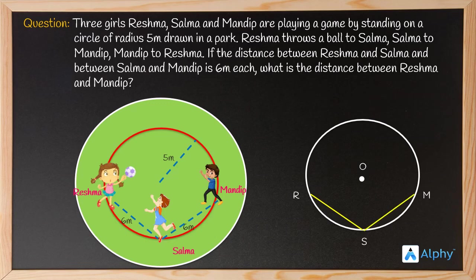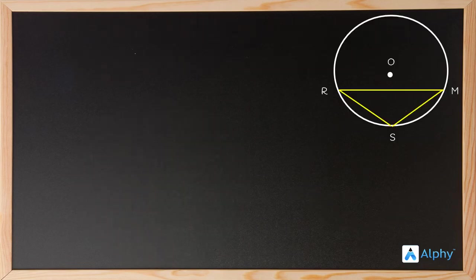Joining these points, we need to find RM — the distance between Reshma and Mandeep. When drawing the diagram, place R and M correctly: the radius is 5 meters and RS and SM are 6 meters each, so be careful not to place them too far or too near. Now join O to R, O to S, and O to M.